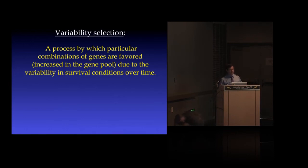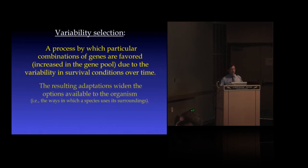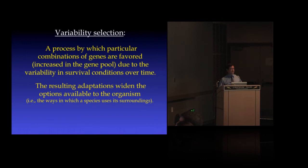This filtering process favors certain combinations of genes that enhance the plasticity of the organism and the adaptability of its lineage in ways that widen the options available to that organism—that is, the way its species uses its surroundings.